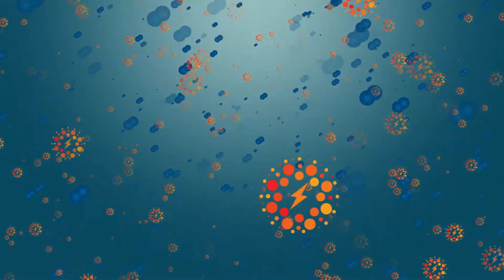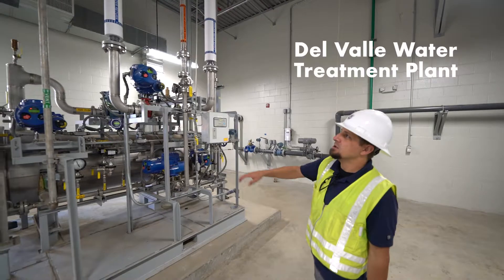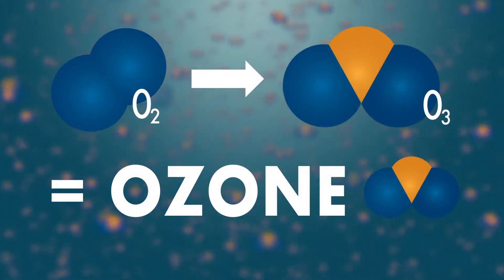First, an electric spark is combined with oxygen, or O2, in specialized ozone generator tanks at our DelVal Water Treatment Plant. The O2 gets broken up, then rearranged to become supercharged O3 molecules, or ozone.